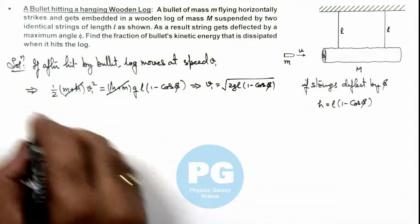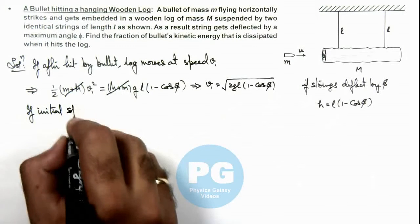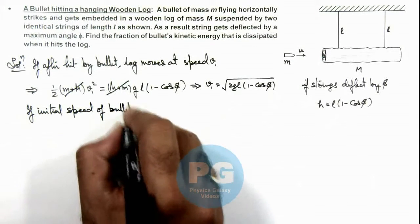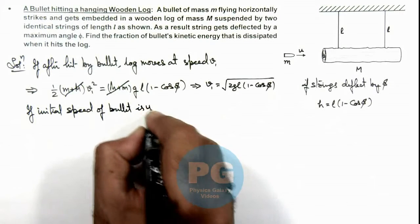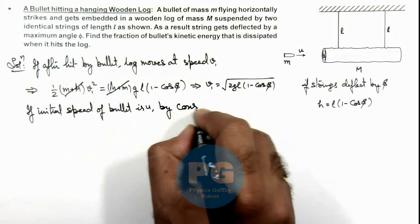Now we can say if initial speed of bullet is u, then we can write by conservation of momentum: